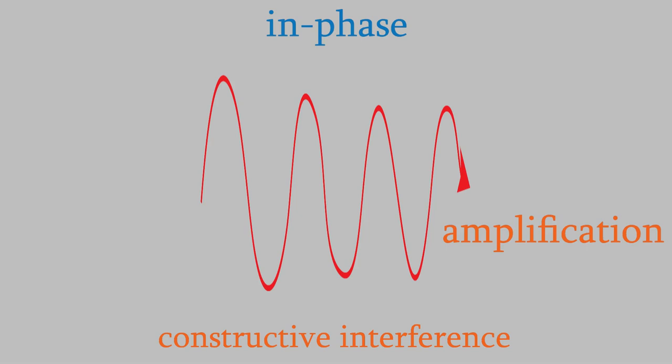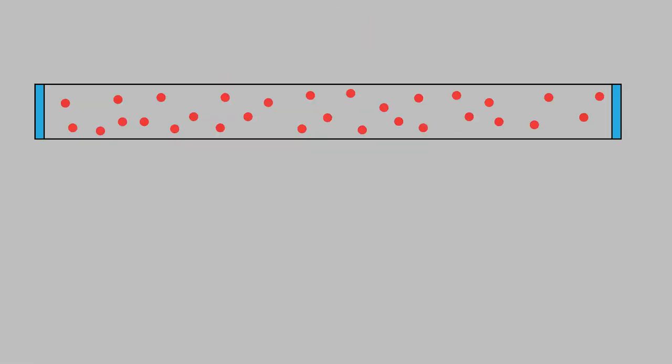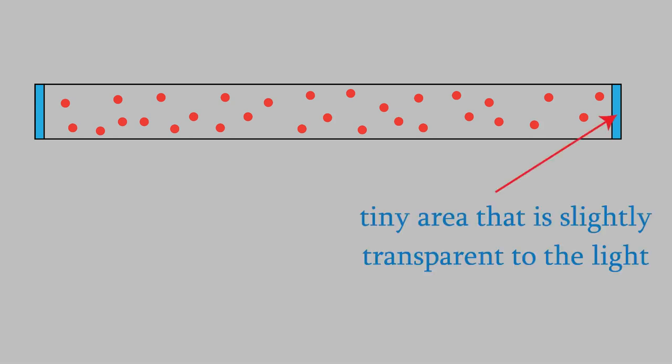Since many billions of photons are added together in this way, that explains why lasers produce such an intense beam of light. It actually also explains why laser light is so tightly focused. One of the two mirrors at either end of the laser tube will have a tiny area that's less reflective than the rest of the mirror, through which the light can escape.